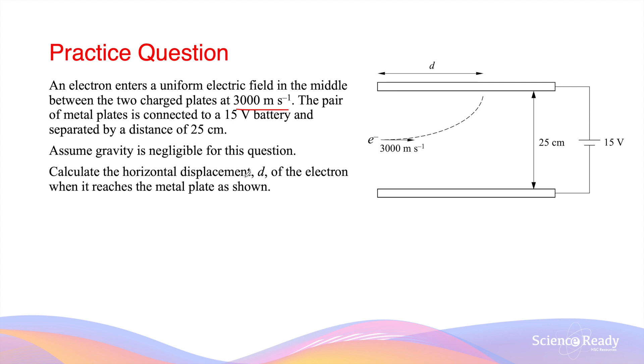There's a few things we should clarify here before we go into the calculations. Gravity is negligible in this situation because the acceleration of the electron due to gravity, which would be 9.8 meters per second squared, will be very small compared to the acceleration due to the electric field.